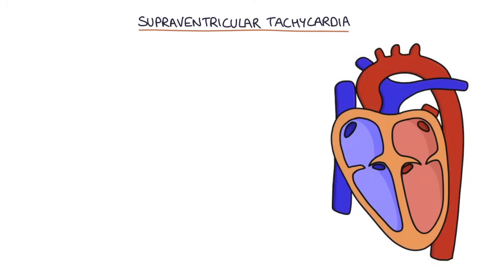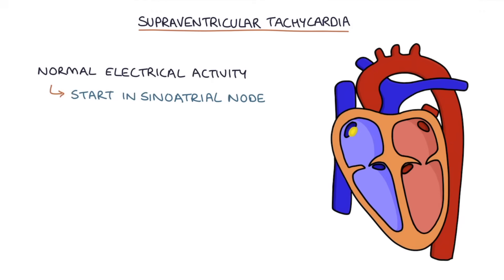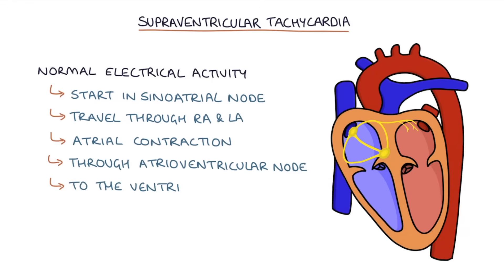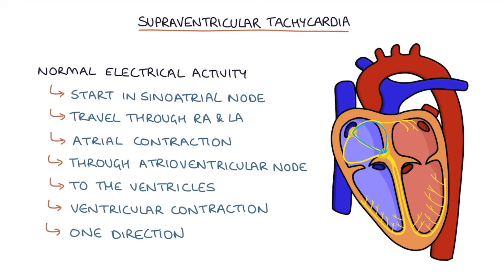Let's start by talking about the pathophysiology. In normal circumstances the electrical signals of the heart start in the sinoatrial node, located at the junction between the superior vena cava and the right atrium. The electrical signals then travel through the right and left atrium causing an atrial contraction, then through the atrioventricular node and down to the ventricles causing a ventricular contraction. Normally the electrical signal can only go in one direction — from the atria to the ventricles — and electricity cannot pass from the ventricles back into the atria.